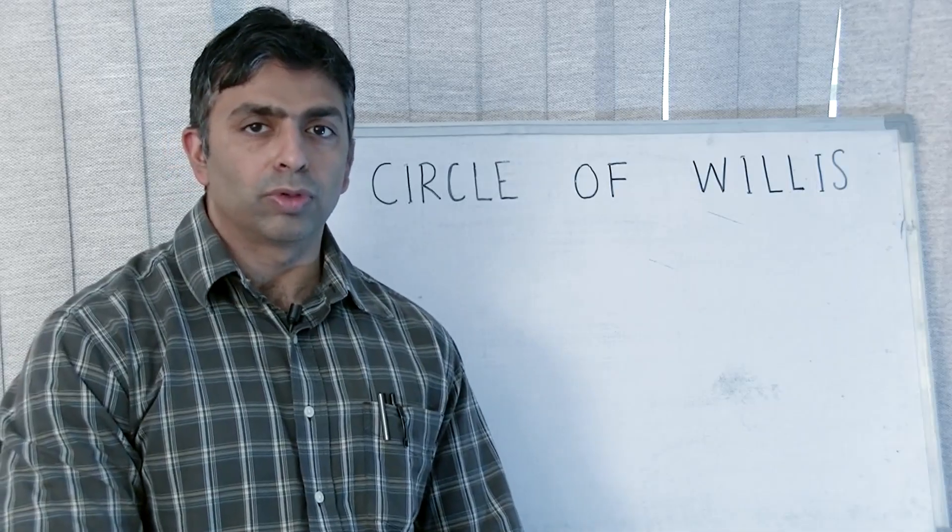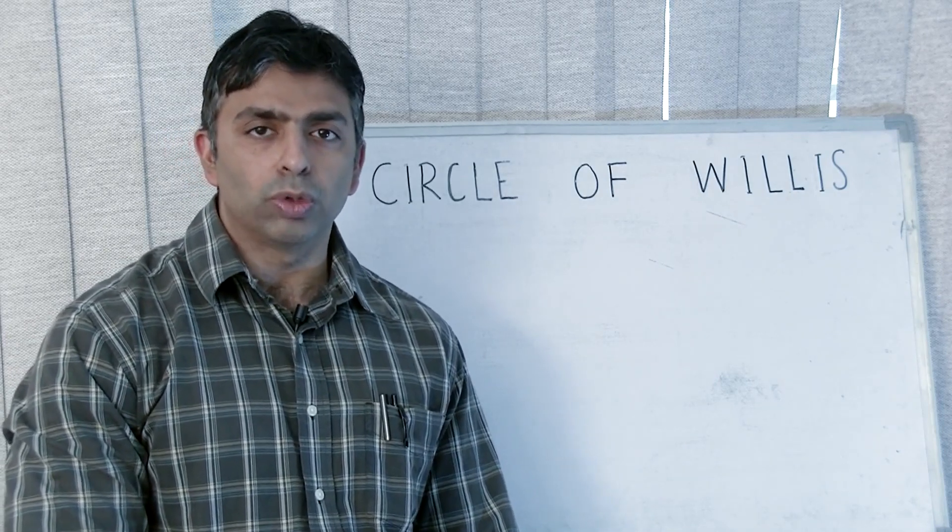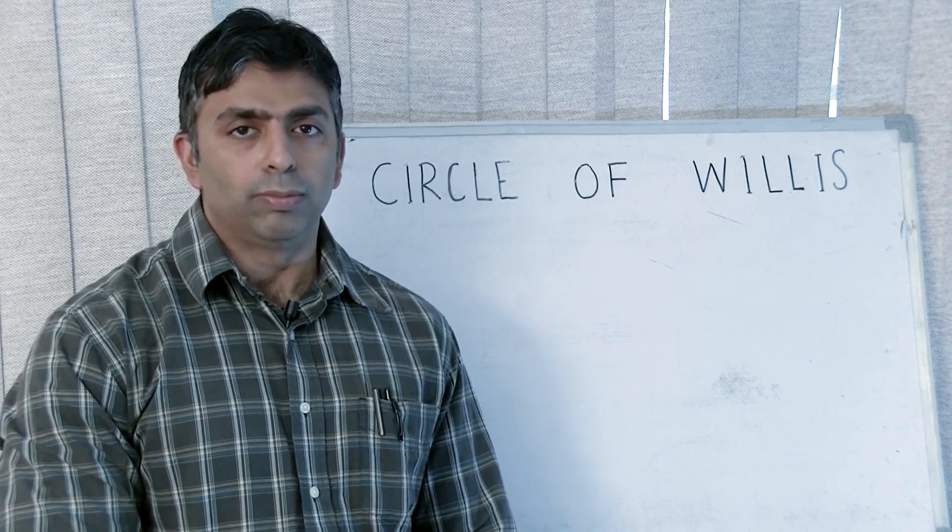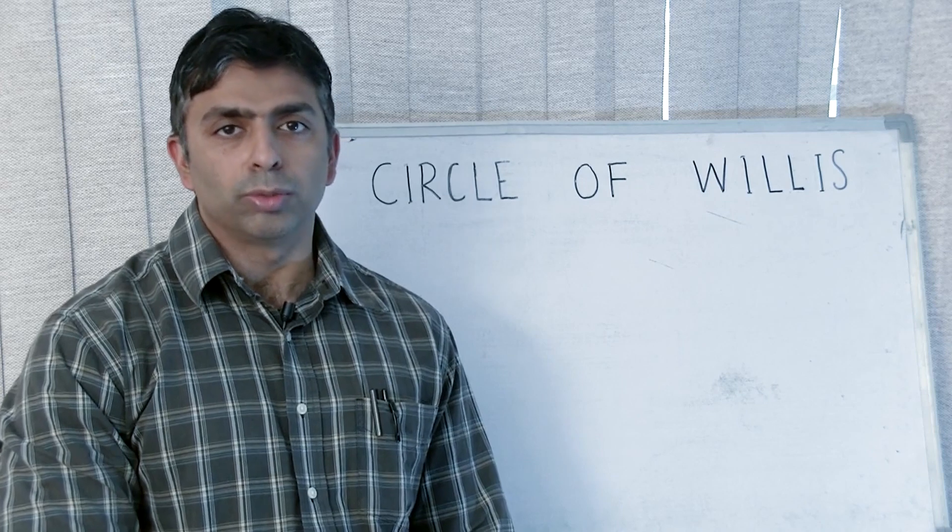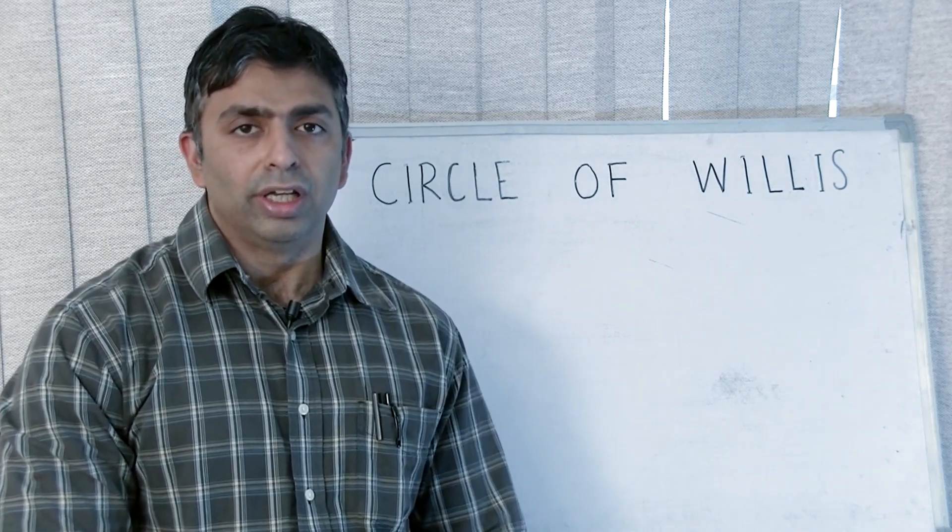Just a brief introduction about Circle of Willis: it is the most important blood supply of the brain. It consists of basically two arteries—anterior cerebral artery and the posterior cerebral artery—and both of them are connected with each other through their communicating branches.